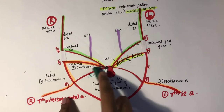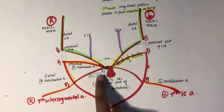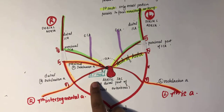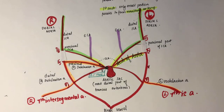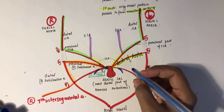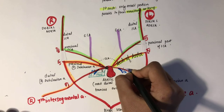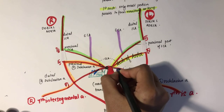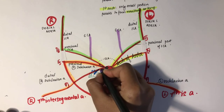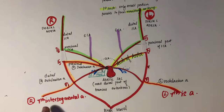The sixth aortic arch is also called the pulmonary arch. The distal portion of the pulmonary artery arises from buds of the sixth arch that grow into the developing lungs. The proximal part of the pulmonary artery arises from the proximal part of the sixth aortic arch, as seen here.